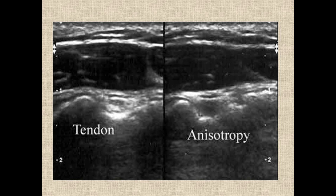This is important clinically because many structures show a tendency for anisotropy, where at one angle you get quite a good image of the structure you're interrogating, but then a small change in hand position or the angle of the probe directing the ultrasound beam can give a very poor quality image, because much of the ultrasound energy is being reflected away from the probe and not returning back to it.